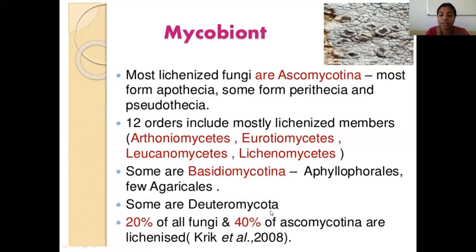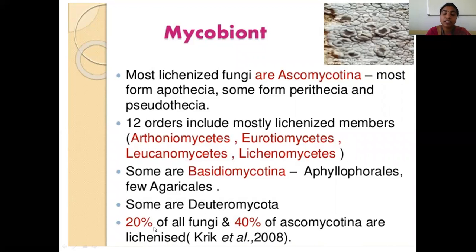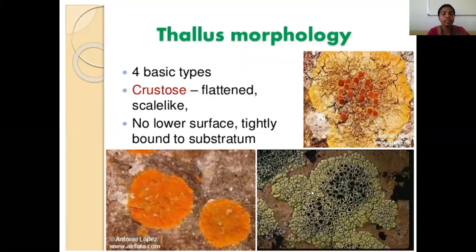20% of all fungal composition consists of lichenized fungi, and 40% of the fungal partner — that is the mycobion — is taken by Ascomycotina fungi. So 20% of all fungal members and the majority of Ascomycotina fungal members are lichenized as a mycobion partner.